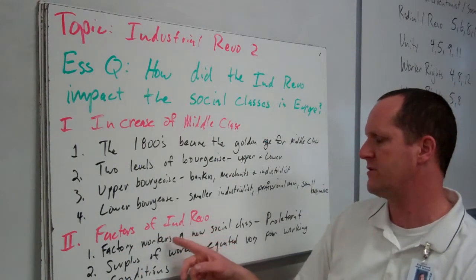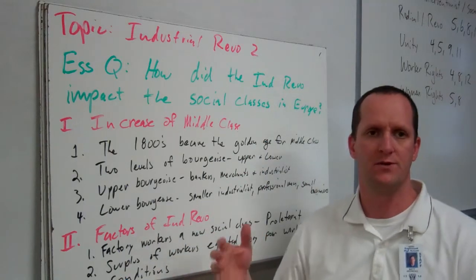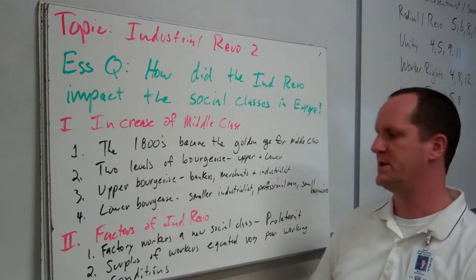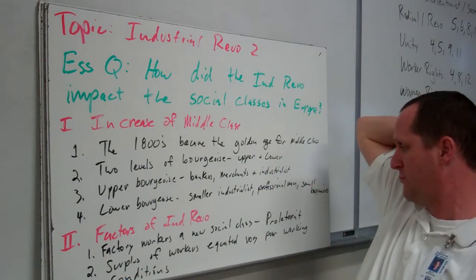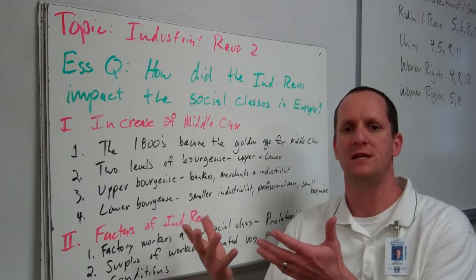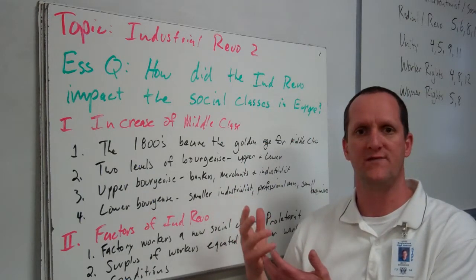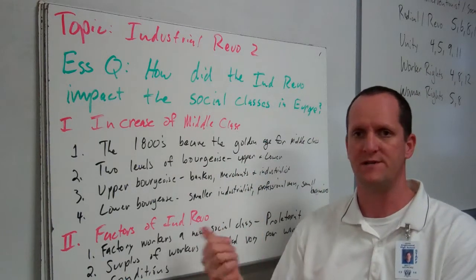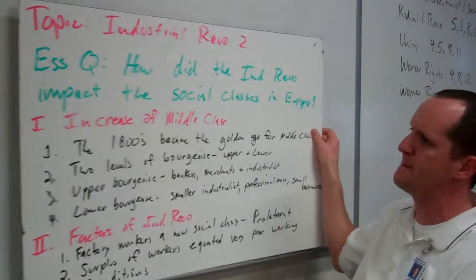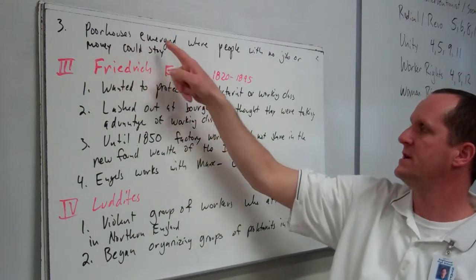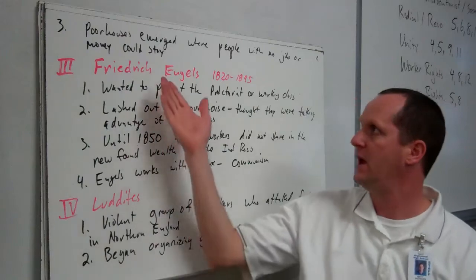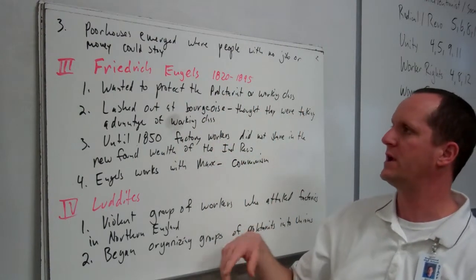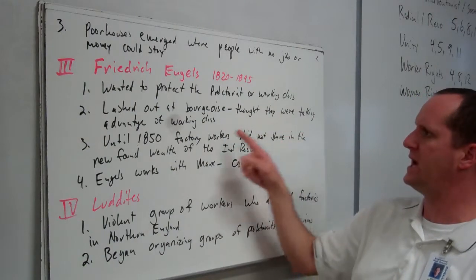A factor of the Industrial Revolution was factory workers forming a new social class. So many people poured into the cities, and these factory workers made up a new social class called the proletariat. A surplus of workers equated to very poor working conditions. The large industrialists — owners of these factories — had their pick of the litter and did not need to maintain good working conditions, because if someone complained they'd just be replaced. There were actual poorhouses that emerged where people with no job or money could stay and live. Friedrich Engels (1820–1895) wanted to protect the proletariat or working class and lashed out at the bourgeoisie, believing they were taking advantage of the working class.